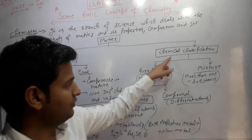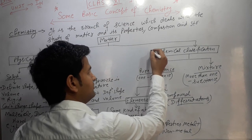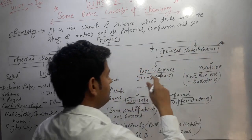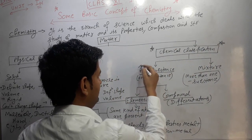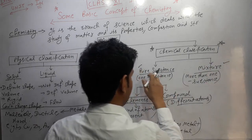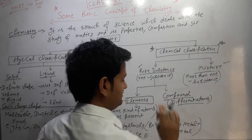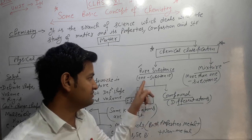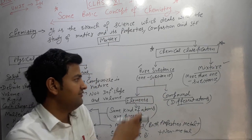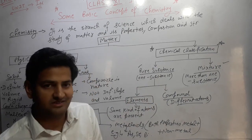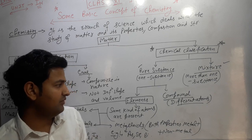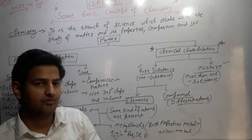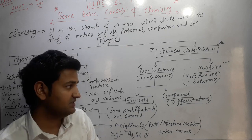The second, very important classification is chemical classification. According to chemical classification, matter is divided into two types: pure substances and mixtures. Pure substances are those made up of only one type of particle or substance, whereas mixtures are made up of more than one type of substance.